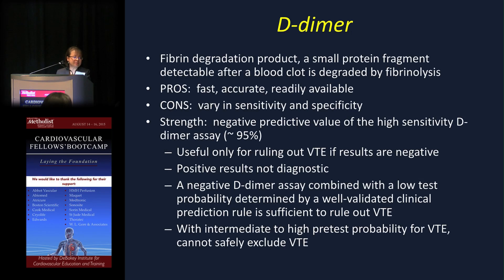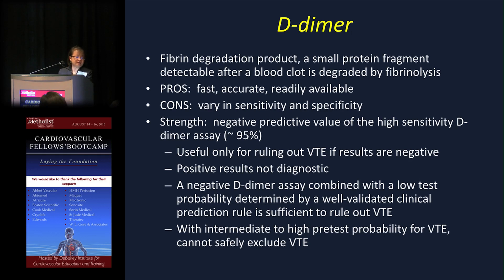D-dimer is a fibrin degradation product — a small protein fragment detected after a blood clot is disintegrated by fibrinolysis. It's fast, accurate, and found in every emergency room, but it varies between clinical situations, patients, and assay systems. Its strength is a very high negative predictive value, so it's only useful to rule out VTE — not to rule it in or diagnose it. A negative D-dimer in a very low pre-test probability patient is sufficient to rule out VTE, though most of us will do an ultrasound anyway.